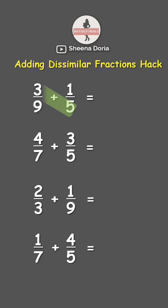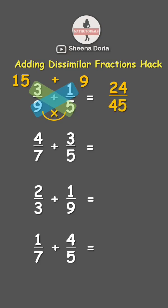Three times five is fifteen. Then nine times one is nine. Then add them together — fifteen plus nine is twenty-four. Then multiply the denominators: nine times five is forty-five. So the answer is twenty-four over forty-five.